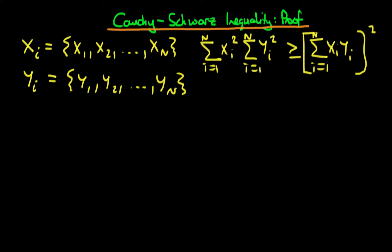It actually has a number of uses, particularly in statistics. In order to realise this, imagine that x has a sample mean of 0, and imagine that y also has a sample mean of 0. You can imagine transforming to a situation whereby the new variable did actually have a sample mean of 0. When we assume that the sample mean of x and the sample mean of y are both 0, we can actually recover something quite useful from the Cauchy-Schwarz inequality.